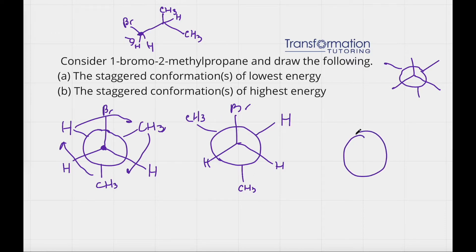And I will do the same again. I will keep my front carbon the same. Bromine, hydrogen, hydrogen. And I'm just going to rotate my carbon behind it. This methyl group, I'm just going to go this way. It's going to be here. The hydrogen is going to be here. And then this methyl group is going to be here.